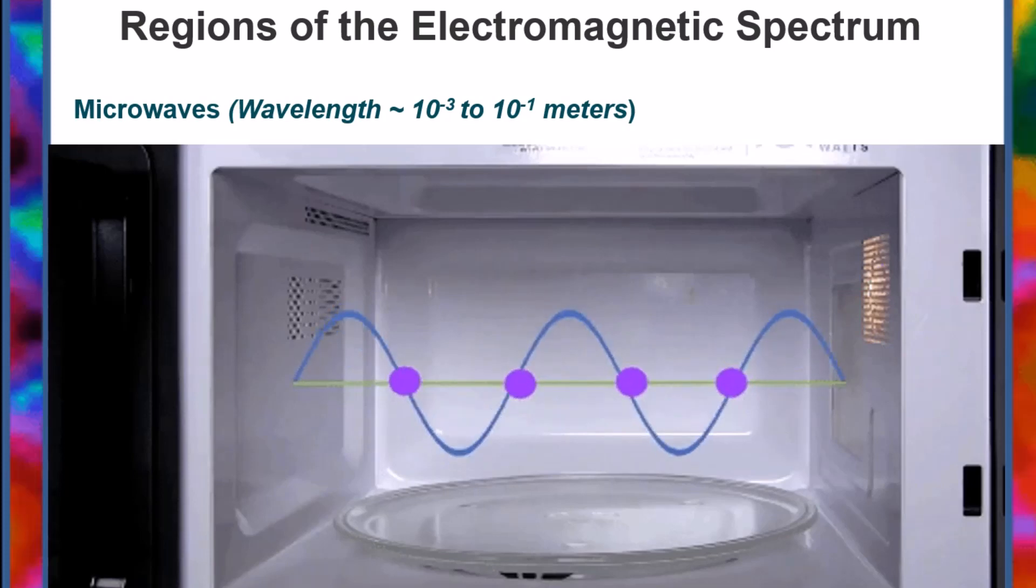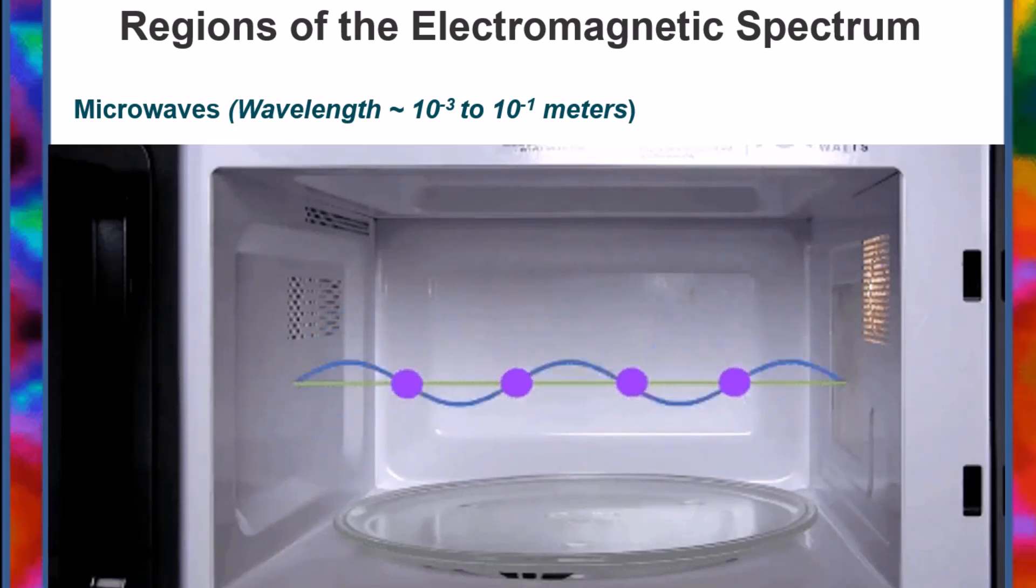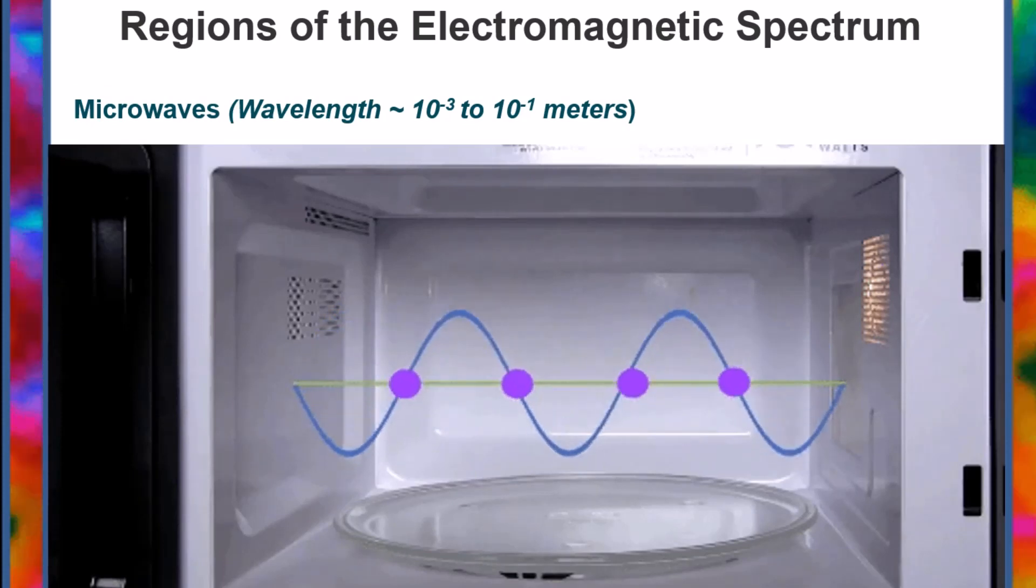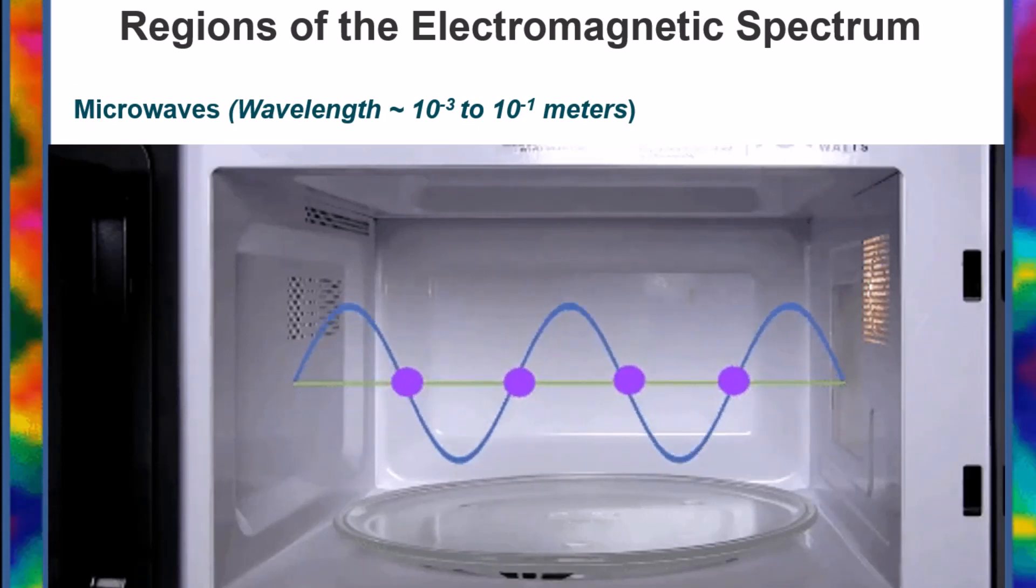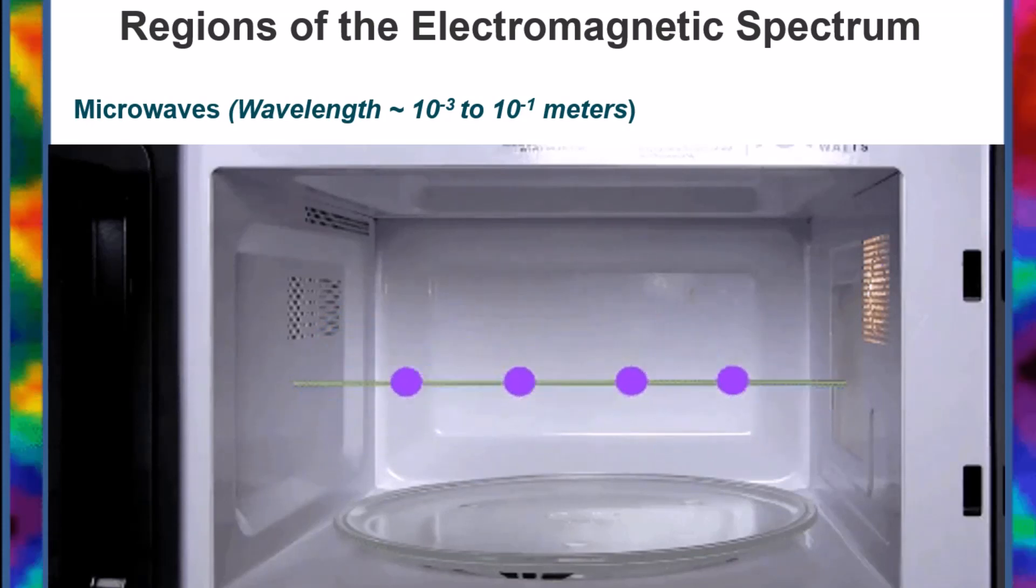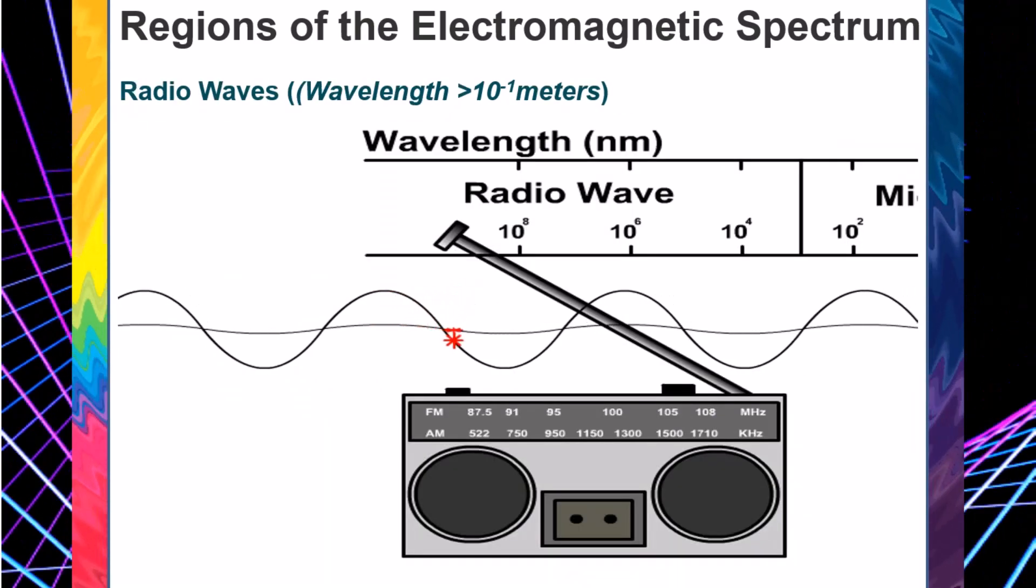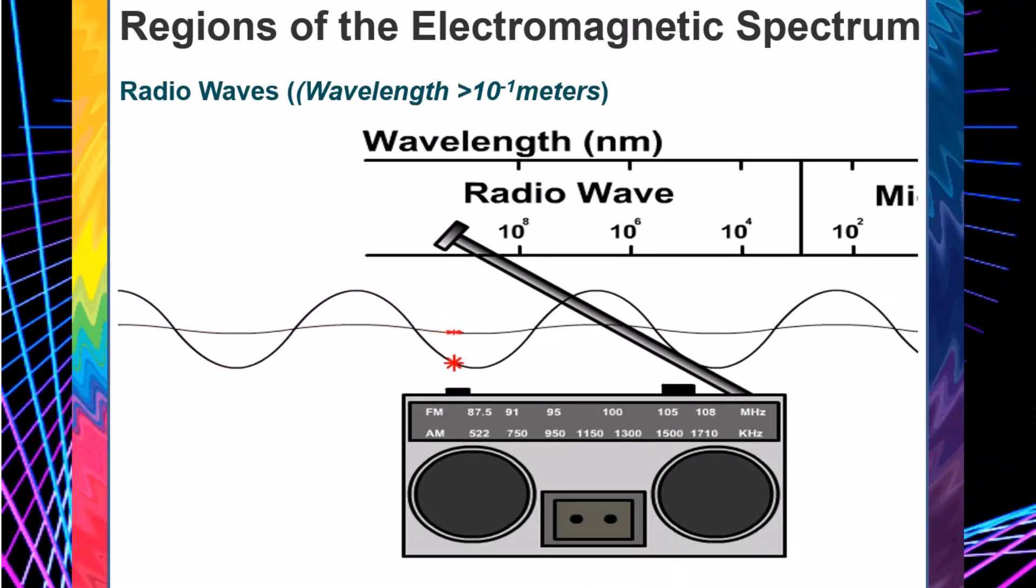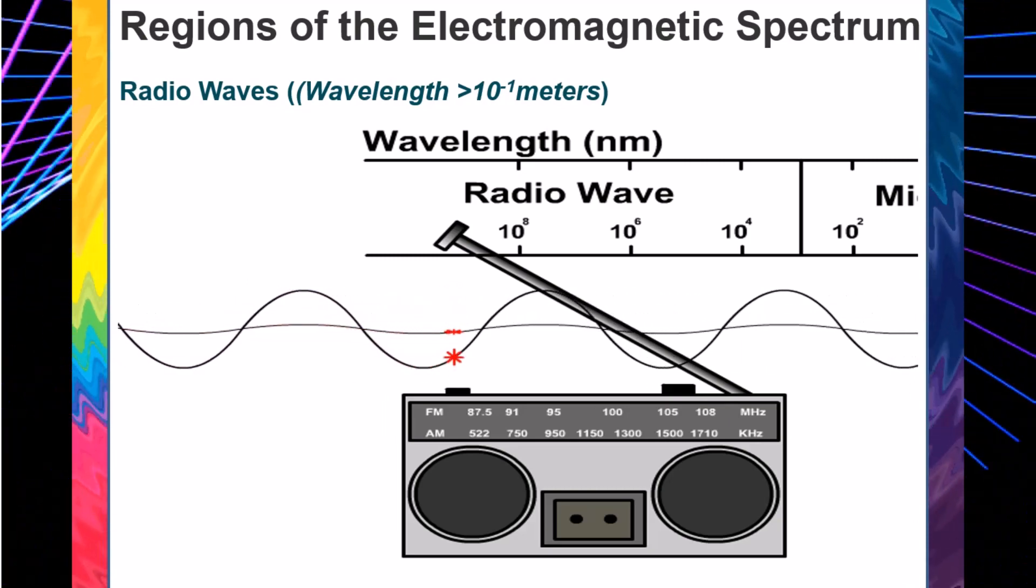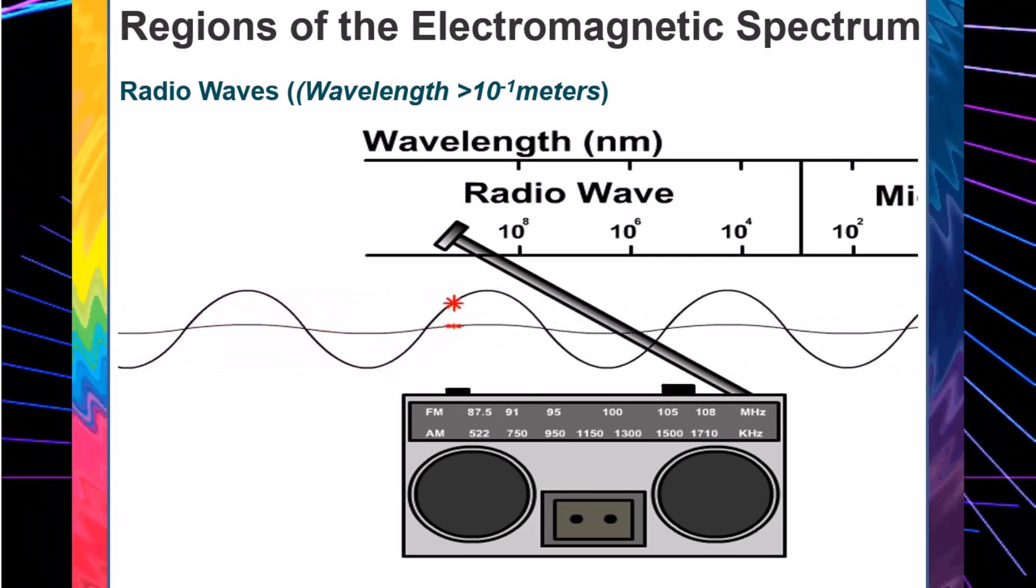Radio waves, wavelength greater than 10 to the power of negative 1 meters. Radio waves have the longest wavelengths in the electromagnetic spectrum with wavelengths ranging from approximately 1 millimeter to several hundred meters. Radio waves are used to transmit a variety of data. Wireless networking, television, and amateur radio all use radio waves. The use of radio frequencies are usually regulated by governments.